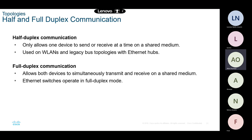Full duplex allows both devices to simultaneously transmit and receive traffic on a shared medium. Our switches nowadays operate on full duplex, unlike hubs which operated on half duplex. That is why a cable network connected to Ethernet cables never really gets slow even if more users join — unlike Wi-Fi which works on half duplex and gets slower.